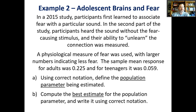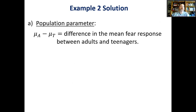Check the chart — that's what it says. When we have two groups and have to subtract one mean from another, we label them to remember which is which. So mu_1 minus mu_2 becomes mu_A minus mu_T, where A is for adults and T is for teenagers. The difference in the mean fear response between adults and teenagers is a population parameter — we're talking about all adults and all teenagers — and this is what researchers are trying to learn about from the sample.